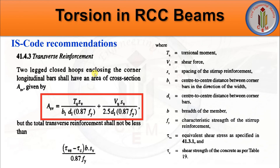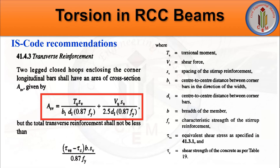As per Clause 41.4.3, for transverse reinforcement, two-legged closed hoops enclosing the corner longitudinal bars shall have an area of cross section Asv given by: Asv = (Tu × sv) / (b1 × d1 × 0.87fy) + (Vu × sv) / (2.5 × d1 × 0.87fy). The total transverse reinforcement shall not be less than: (τve − τc) × b × sv / (0.87fy). That covers all the IS 456 recommendations about torsion. Please comment if you have any queries, hit the like button, share with your friends, and subscribe to the channel for more videos.